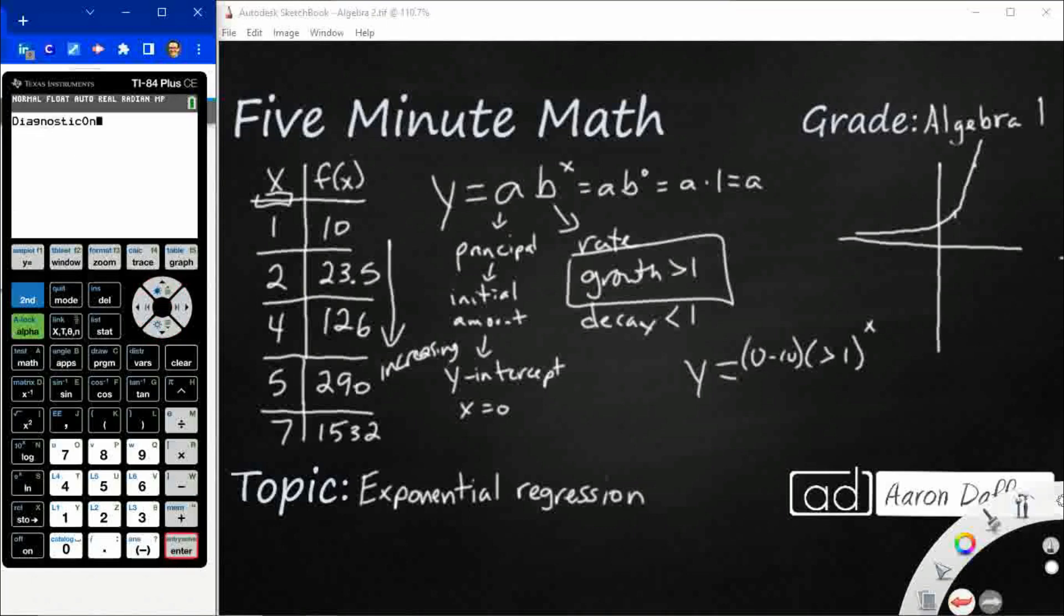Now we're going to hit that stat button. We're going to hit the stat, and we're going to edit, because we need to enter in these lists. So we're just going to go down here and hit 1, and then 2, 4, 5, 7. So we're just taking in our x's.